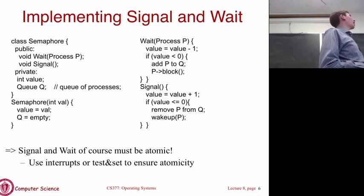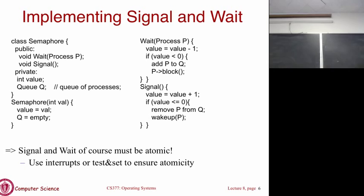Here's how we actually implement a semaphore — similar to a lock. We have wait and signal, a value (like whether the lock is free), and a queue of waiting processes. The key difference from a lock is the constructor: when creating a semaphore, you pass in an integer as the initial value, which could be zero, one, or a higher value. That integer represents the number of resource slots.